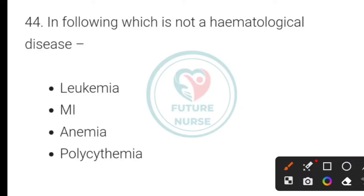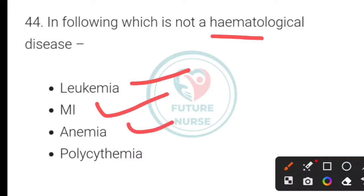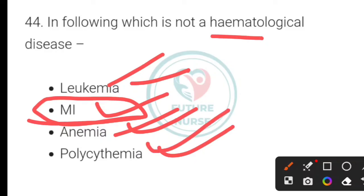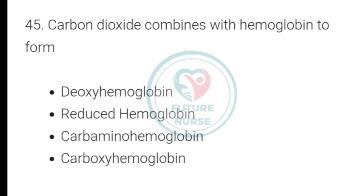Which of the following is not a hematological disease? Options: leukemia, myocardial infarction, anemia, or polycythemia. The correct answer is myocardial infarction — leukemia, anemia, and polycythemia are hematological disorders.